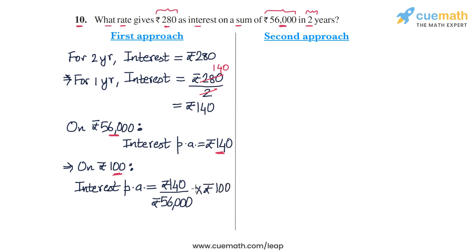Now let's calculate this. We cancel out two zeros from here and from here, and then one zero from the numerator and denominator. We have 14 by 56, and 14 by 56 in simplest form will be 1 by 4. So the interest per annum will be ₹1/4 or ₹0.25.